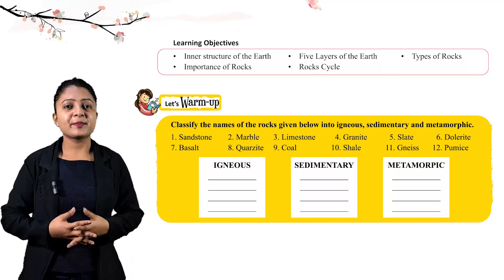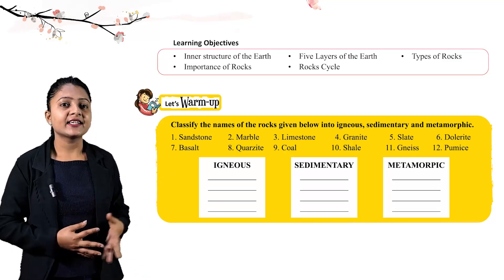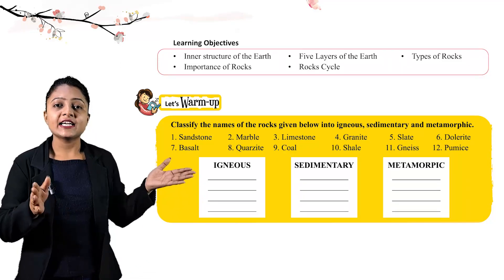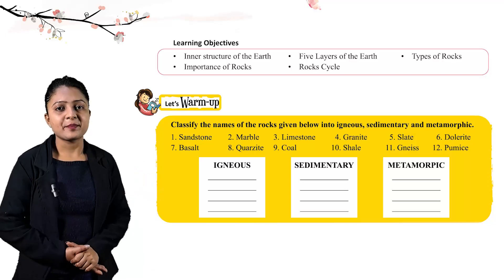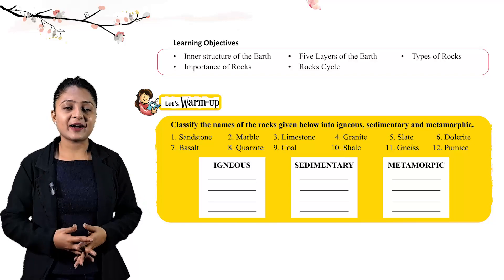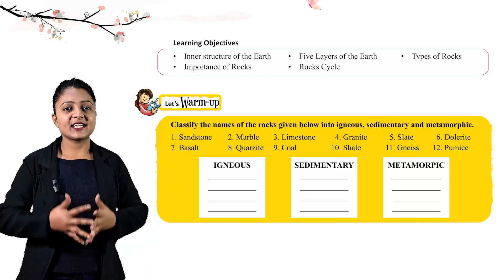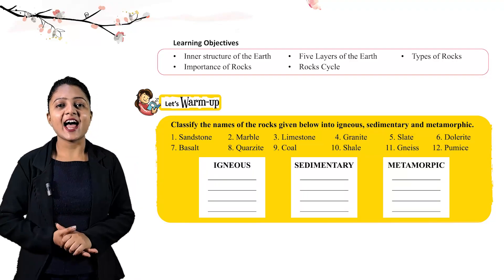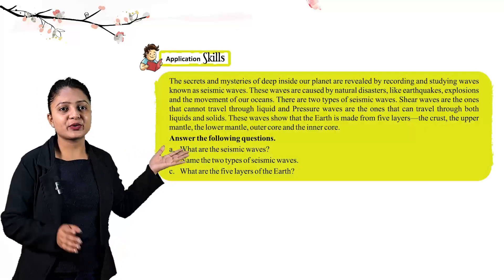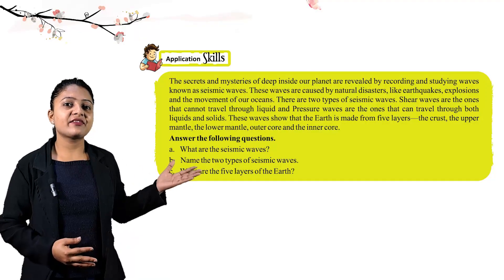Let's warm up. Classify the names of the rocks given below into igneous, sedimentary, and metamorphic rocks: sandstone, marble, limestone, granite, slate, dolerite, basalt, quartzite, coal, shale, pumice. Identify which category each rock belongs to — igneous, sedimentary, or metamorphic.